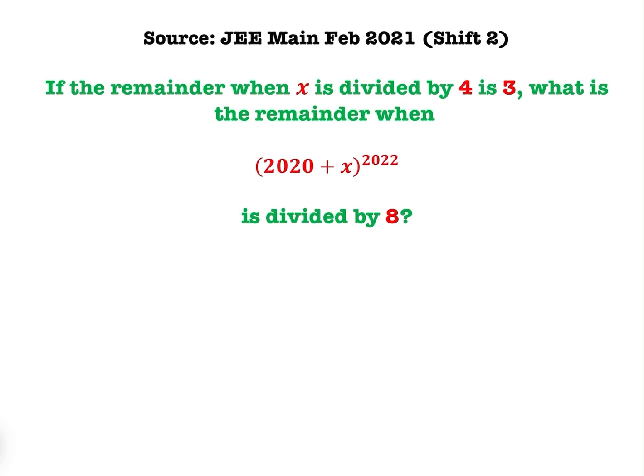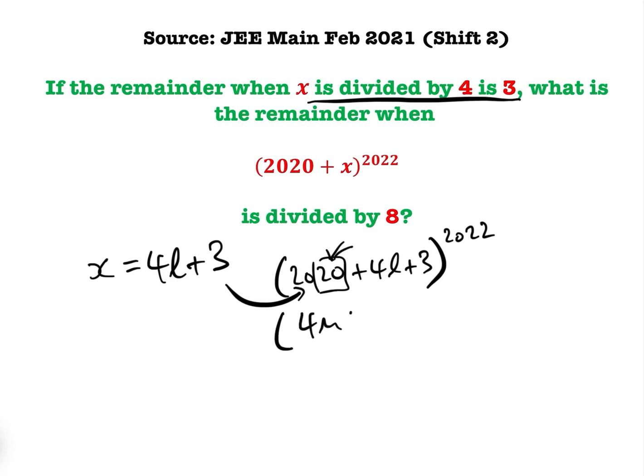So what I'm going to do is I'm going to do this one without any explanation. So basically, we can let x = 4l + 3, because when x is divided by 4, the remainder is 3. So therefore, we have (2020 + 4l + 3)^2022. 2020, we know, is divisible by 4 because the last two digits, 20, is divisible by 4. So therefore, we know we can write that as (4n + 4l + 3)^2022, which equals (4k + 3)^2022.